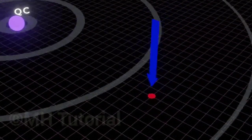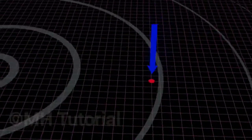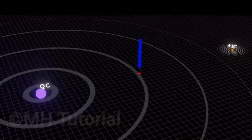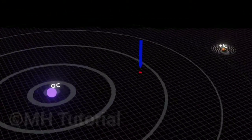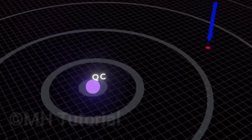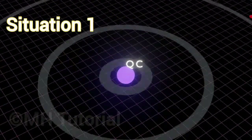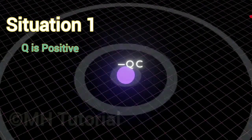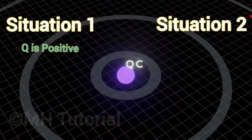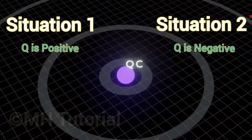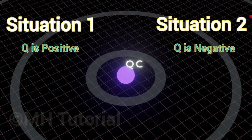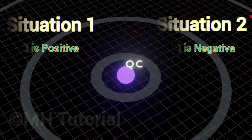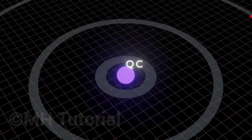First, to answer this question, consider the conditions. Two situations may arise because the charge Q can either be positive (plus Q Coulombs) or negative (minus Q Coulombs). In the first case, let the huge central charge Q be positive, and thereafter we shall discuss the second situation when the central charge is negative.